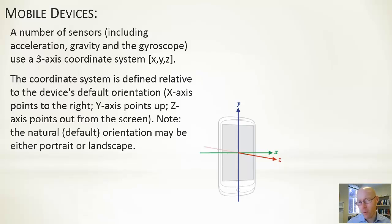It is important to appreciate that the default orientation is something that the manufacturer decides. For phones, it generally is a little bit more straightforward. For tablets, some can be designed to be held in portrait mode, some in landscape mode. But the X, Y, and Z is relative to the default orientation.